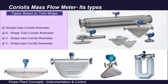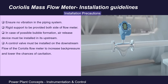Coming to the types: depending on the manufacturer and the application, the tubes in a Coriolis flow meter can be of different shapes — straight tube, S-shaped tube, U-shaped tube, or V-shaped tube. The outer casing will be shaped accordingly to accommodate those tubes.